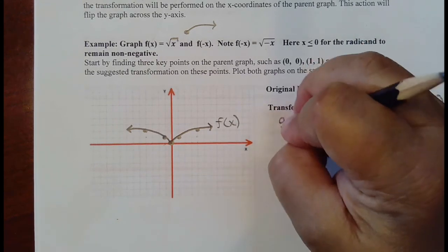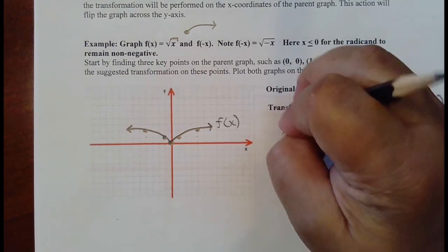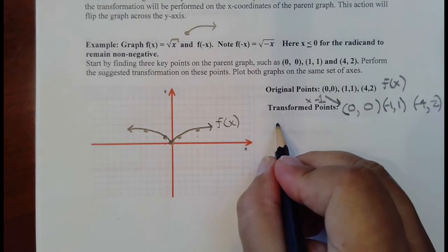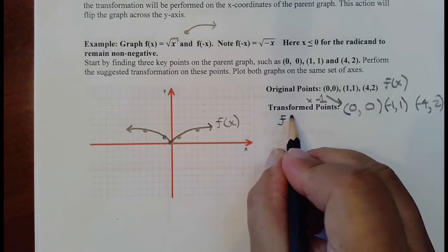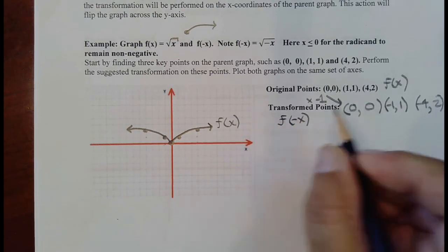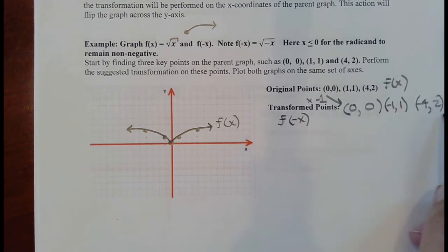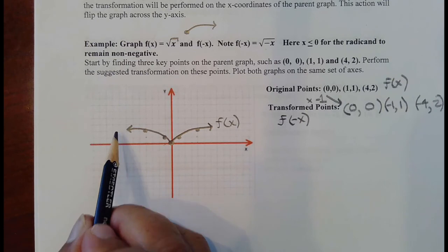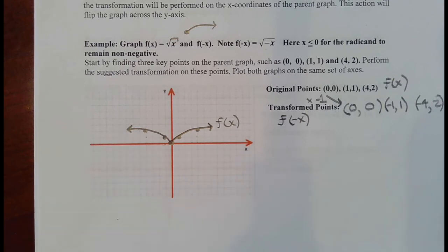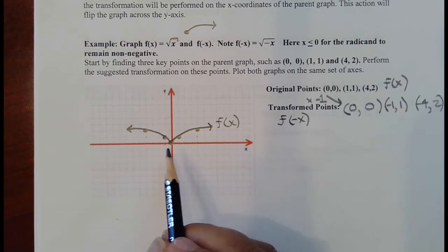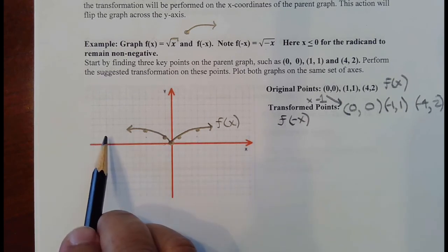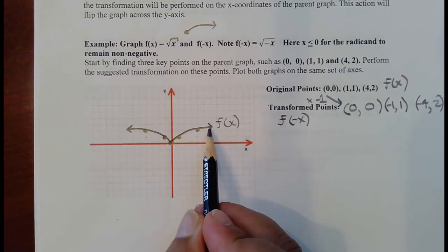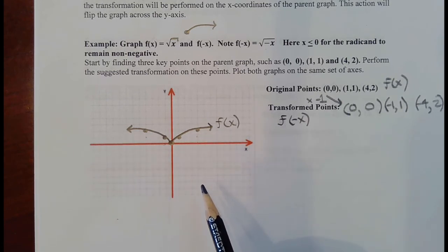So we've now looked at a reflection across the x-axis, achieved by multiplying the Y coordinates by negative one, and then a reflection across the y-axis, which is achieved by multiplying the X coordinates by negative one.